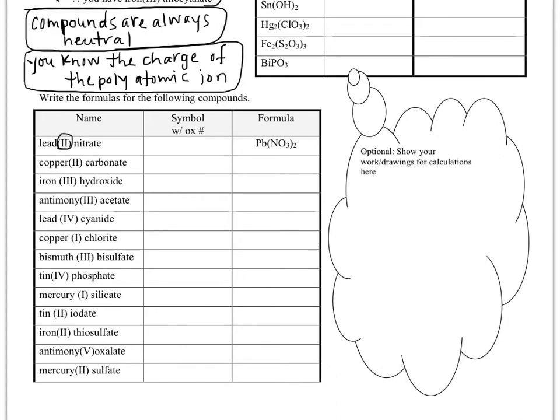So lead can either have a plus two or a plus four charge. But in this compound, the Roman numeral is telling us it's got a plus two charge. Nitrate, we look up on our list of polyatomic ions. It ends with ATE, which should indicate it's a polyatomic ion. And sure enough, it's NO3 with a minus one charge.